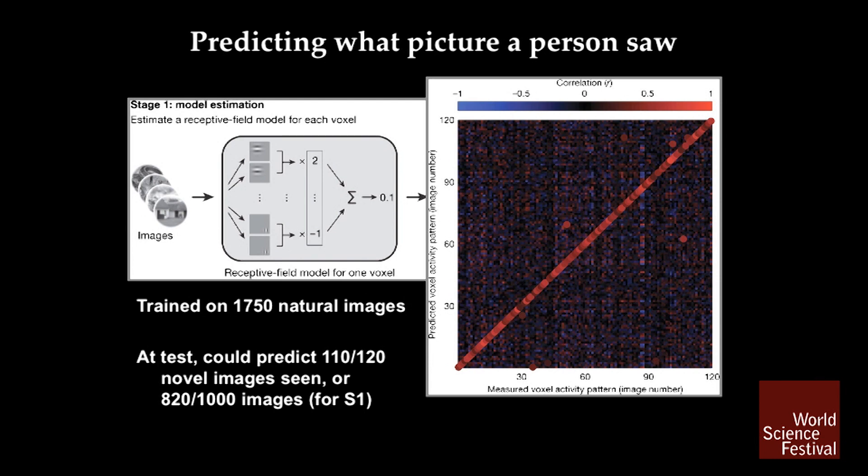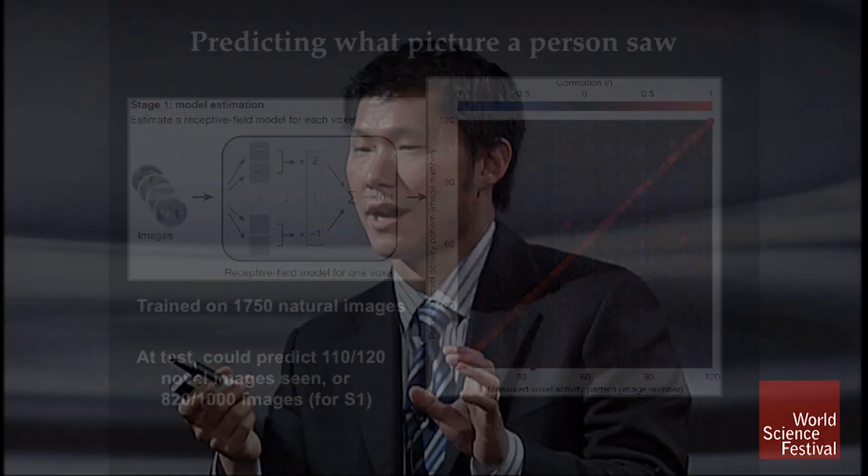Along one axis is the image that they saw, and along the other axis is the predicted image. The fact that everything falls on that diagonal means they're getting it right most of the time.